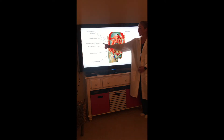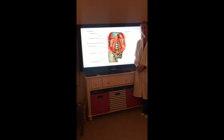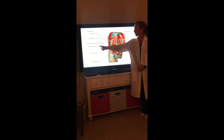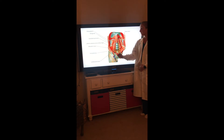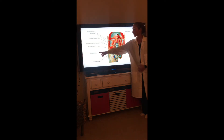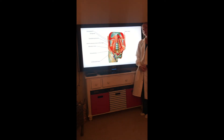The lateral cutaneous nerve of the thigh from L2 and L3 supplies the anterior lateral surface of the thigh. The obturator nerve from L2 to L4 supplies the adductors. The femoral nerve from L2 to L4 supplies the flexors of the hip and extensors of the knee.